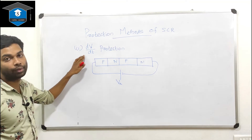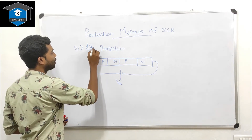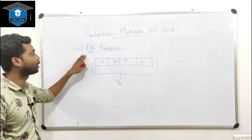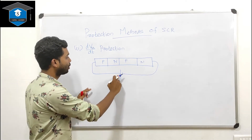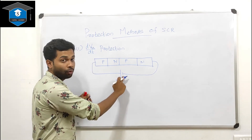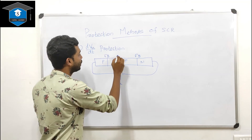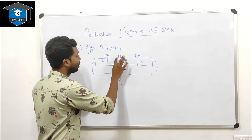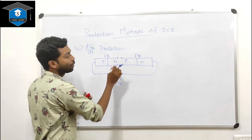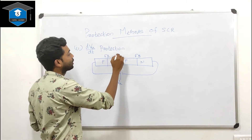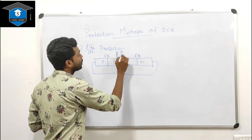Next is dv/dt protection. dv/dt means the rate of change of voltage with respect to time. In the SCR, junction J1 and J3 are forward biased, junction J2 is reverse biased, and junction J2 has a characteristic similar to a capacitance due to the presence of charges.